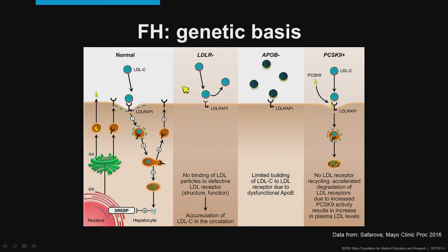This cartoon illustrates LDL metabolism and the variants in these three genes that can lead to FH. Typically, LDL particles are taken up by the LDL receptor on a hepatocyte and then processed within the hepatocyte with degradation and then release of free cholesterol. And then the receptor itself is recycled back to the hepatocyte surface where it can again act to accept LDL particles. If there is a pathogenic variant in LDLR receptor, it may not function, and as a result, LDL particles increase in concentration in the serum and manifest as hypercholesterolemia.